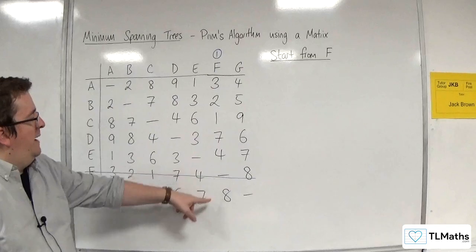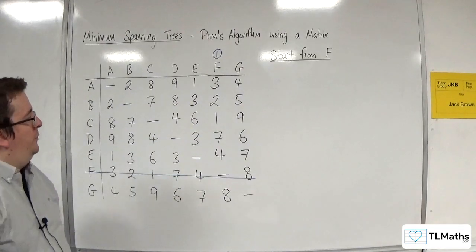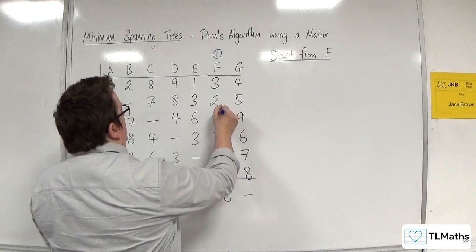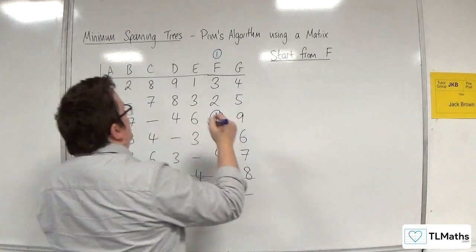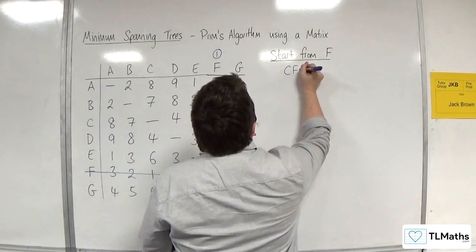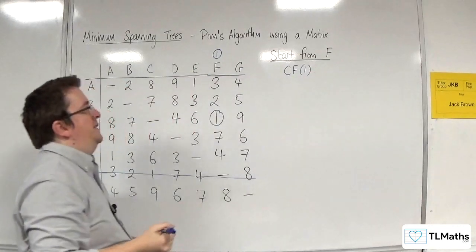I look down column F, and I choose the shortest one. The one with least weight is that one there, so 1. I've connected C to F. CF1 is the first edge chosen.